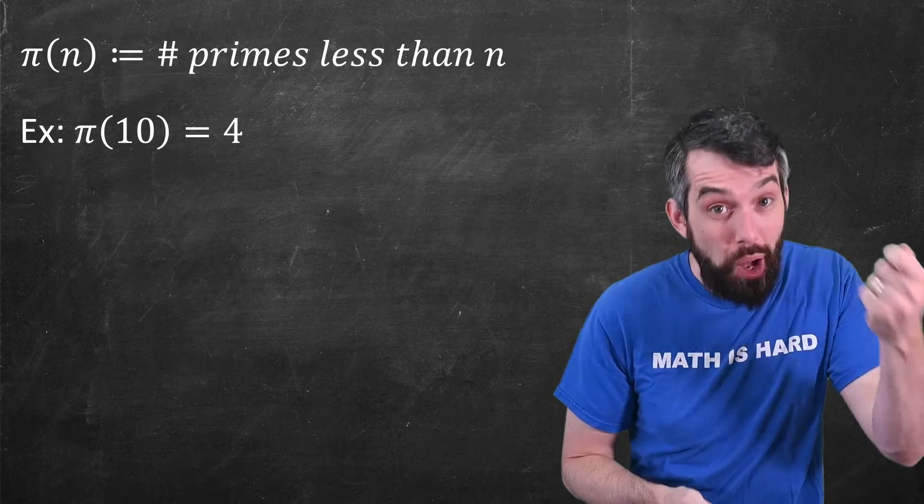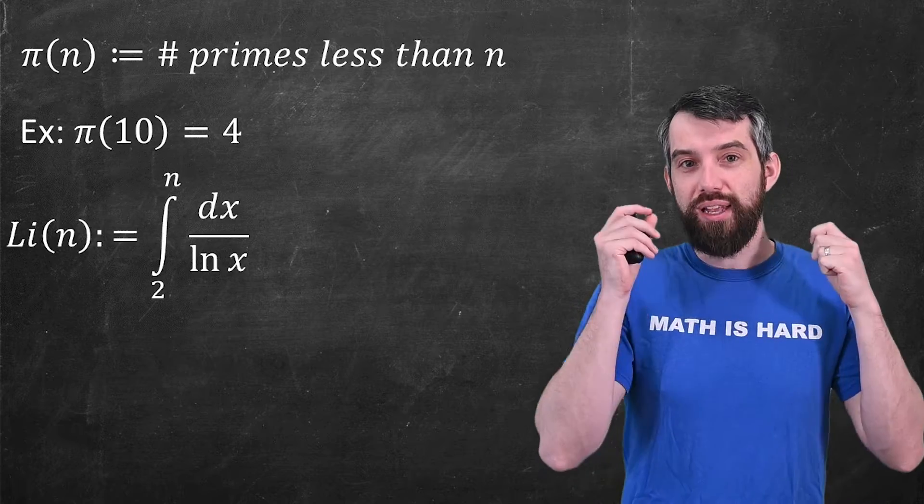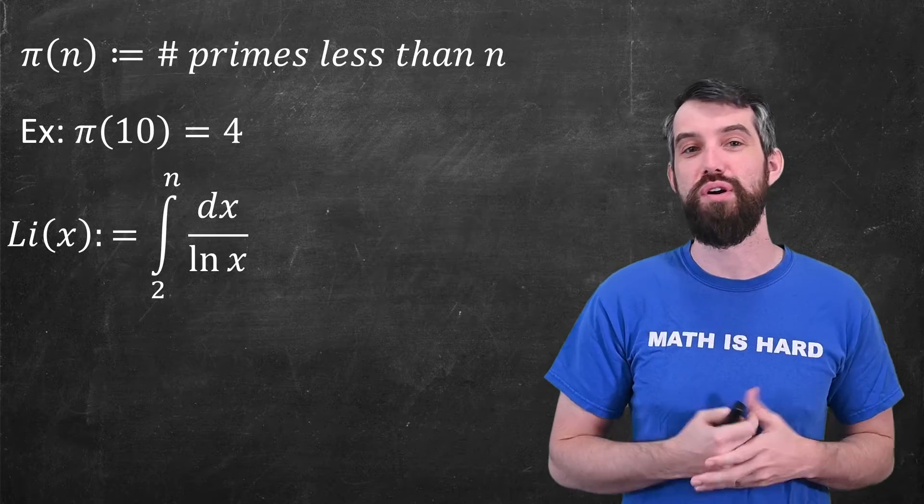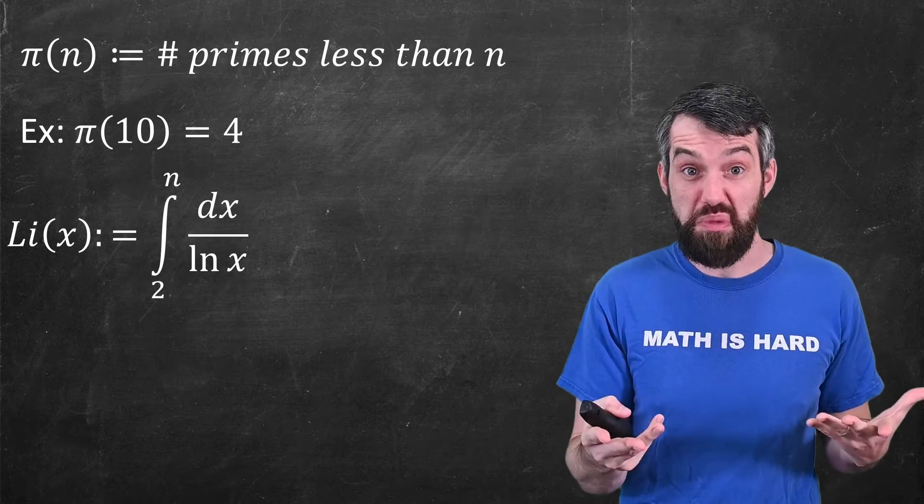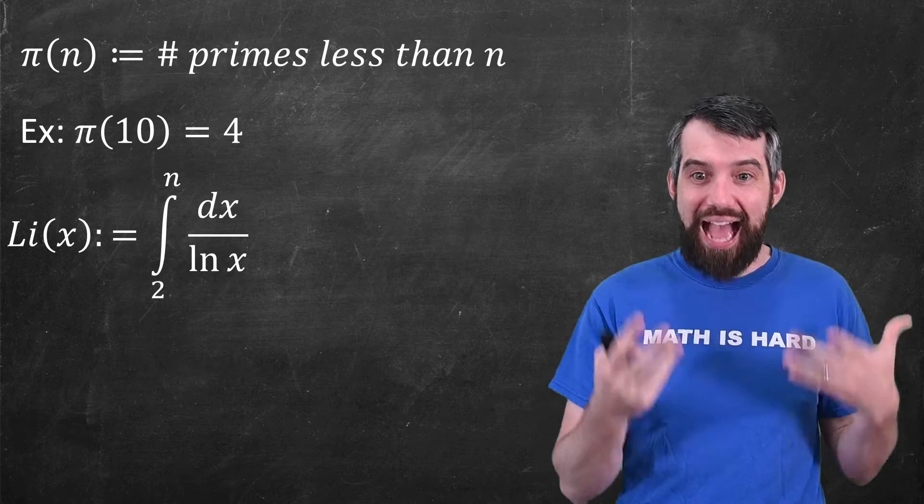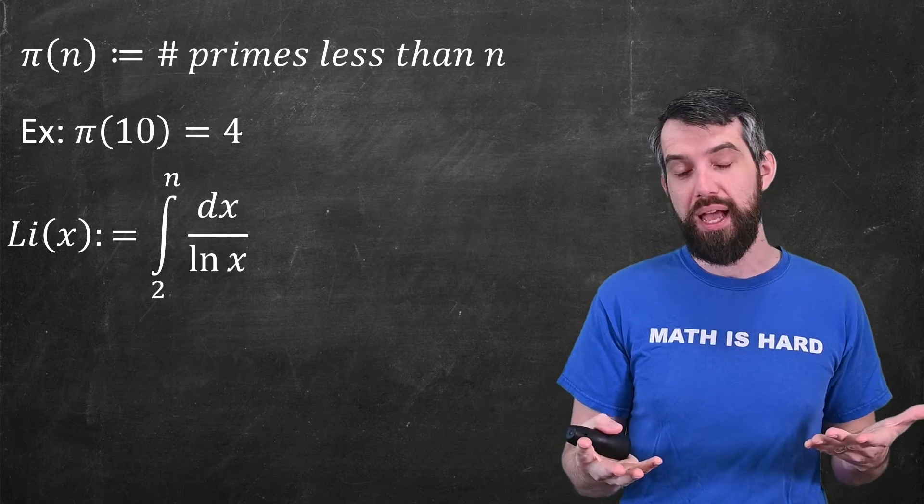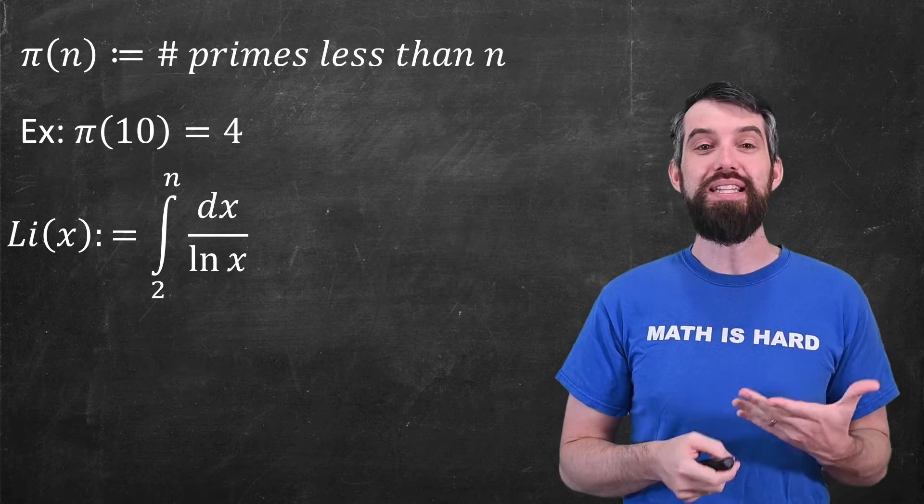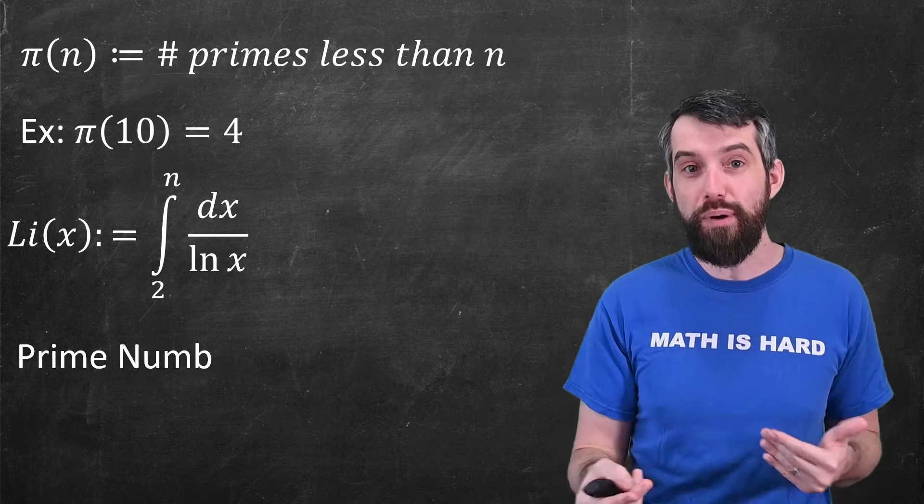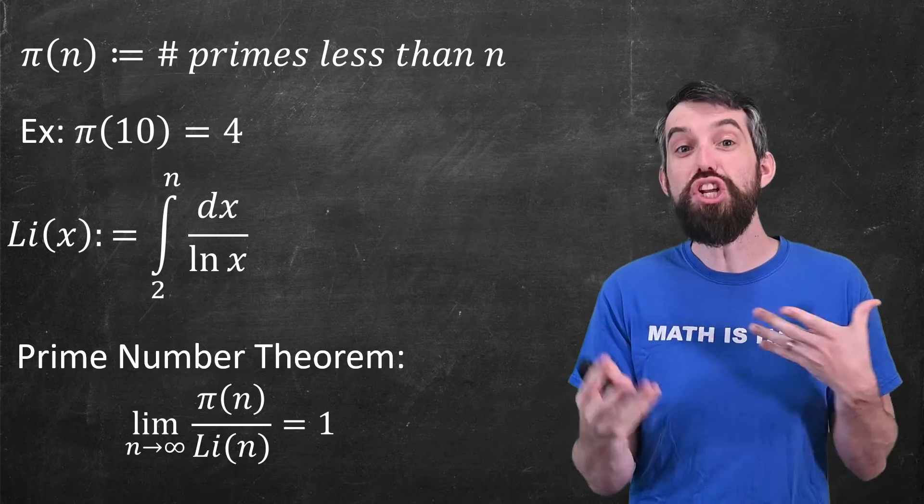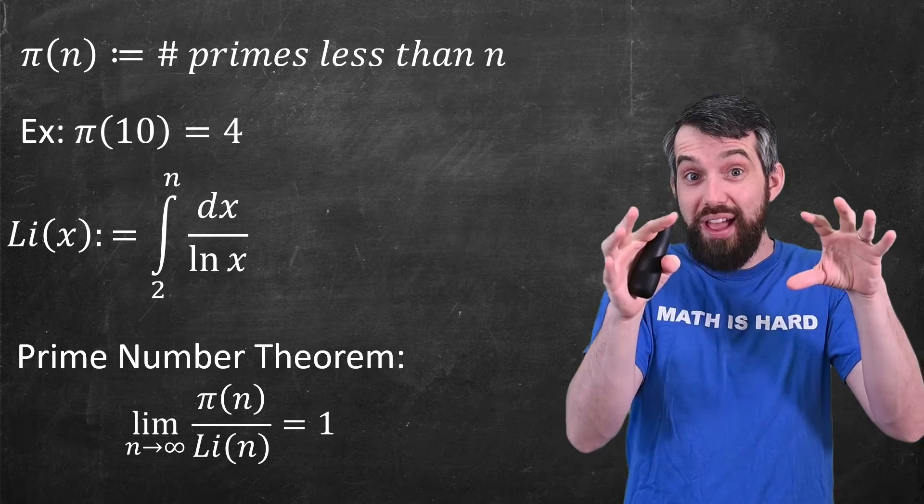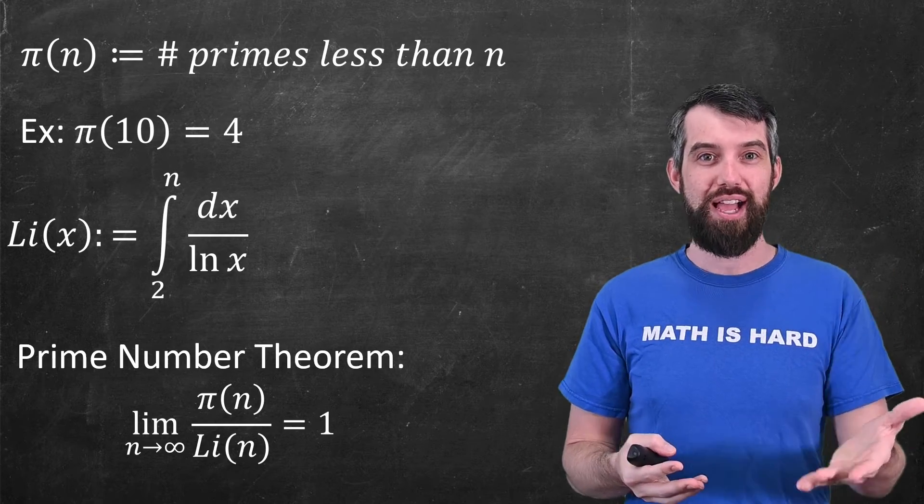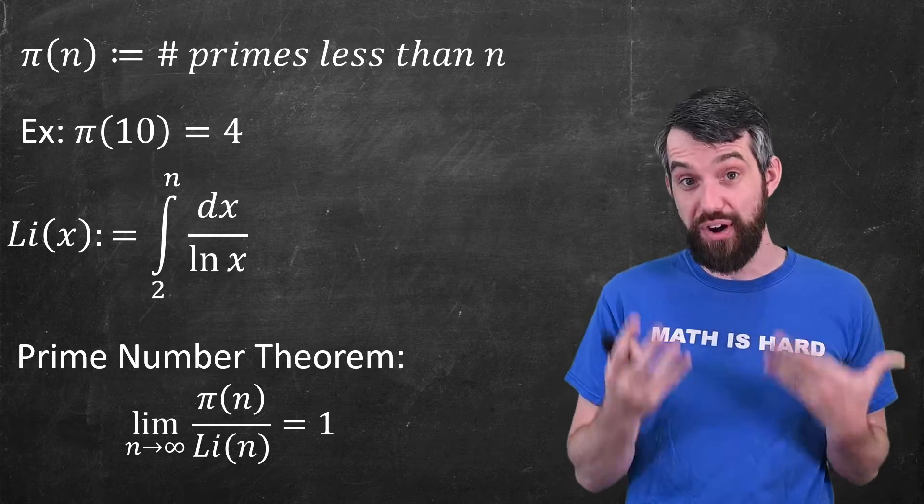There's a great approximation for pi of n. This is called li of n, and it's the integral from 2 up to n of 1 over the logarithm of x, dx. This is an integral. It's a thing we can compute. We can plug this into the computer, and we can ask the computer to evaluate this numerically. And superficially, it doesn't look like there's any connection to primes at all. But indeed, a very deep and important theorem, the prime number theorem, basically says that the ratio of these two things, the ratio between pi of n and li of n, is eventually just going to become 1 when n is large enough. And so the growth of the one function and the growth of the other are very similar.